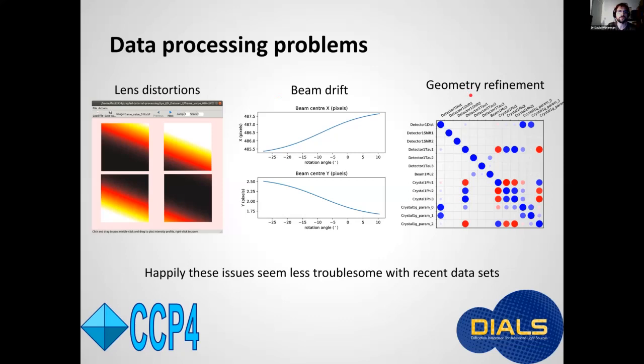And thirdly, the geometry of electron diffraction experiments can be quite challenging to model from the data. So we investigated various diagnostics and different refinement protocols to try to deal with that. And as a result, the main message of the paper we published at that time was that these enhancements were required in dials to process that nanocrystal data set.